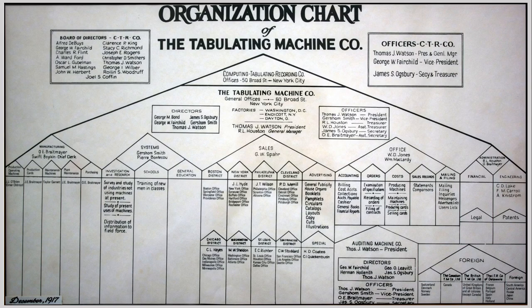Here's the org chart of what used to be called the Tabulating Machine Company — these days IBM. You can see how 100 years ago, in 1917, the idea of company structure was a strict hierarchical breakdown — a tree structure.